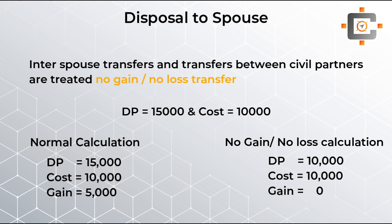Any transaction with a spouse is treated as no gain no loss, meaning whatever the cost amount is, the same amount is written as the disposal proceeds. It's not the actual disposal proceeds nor market value — we write the disposal proceeds equal to the acquisition cost just to make the pro forma result in no gain no loss. These rules only apply when the couples are living together.